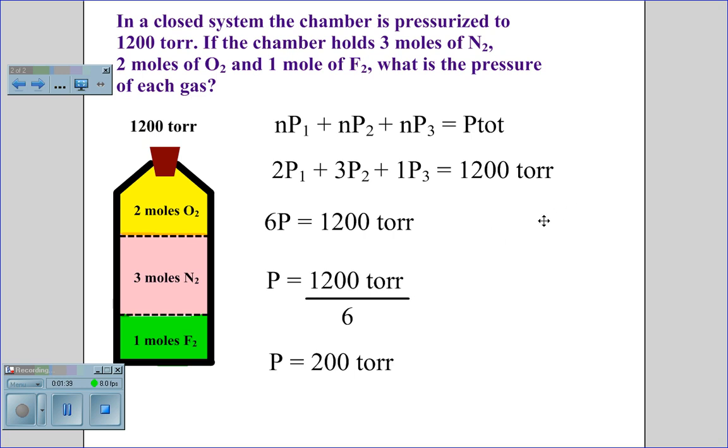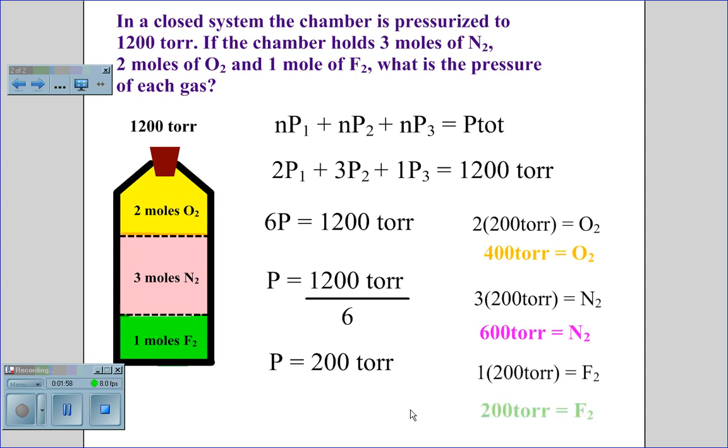So to find the pressure of each gas separately, 2 moles times 200 torr will give us the pressure of oxygen, which is 400 torr. 3 moles times 200 will give us the pressure of nitrogen, which equals 600 torr. And 1 mole of fluorine gas at 200 torr is 200 torr for the fluorine gas.